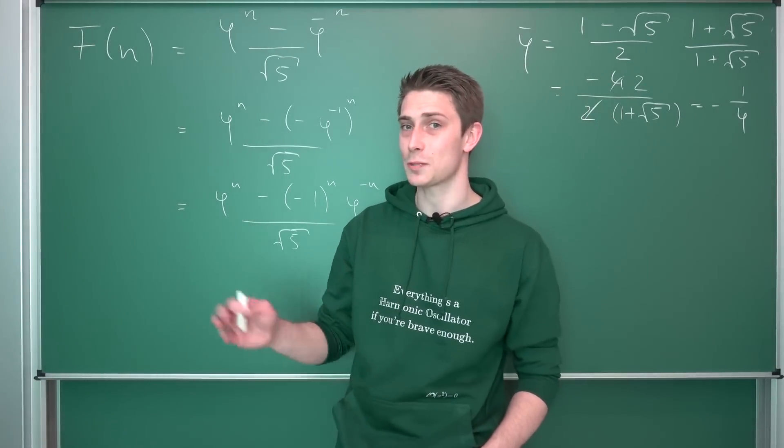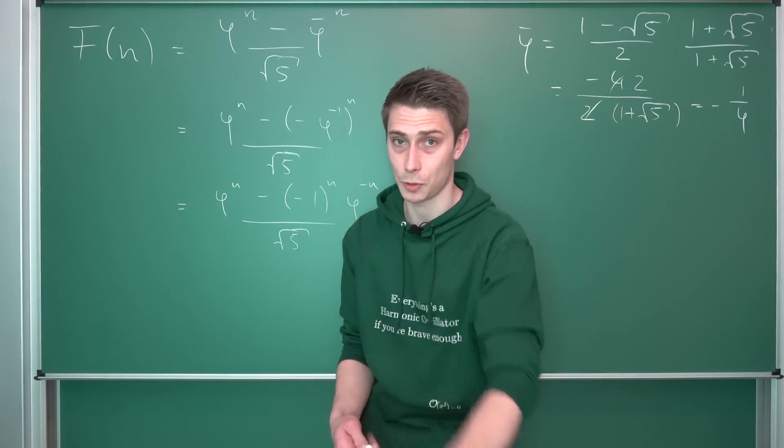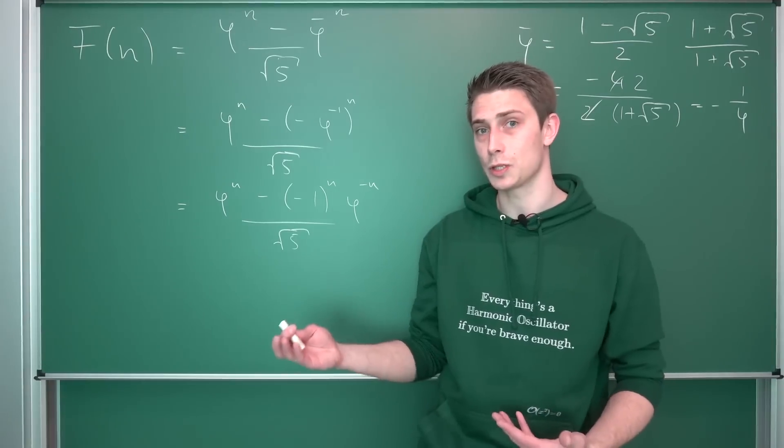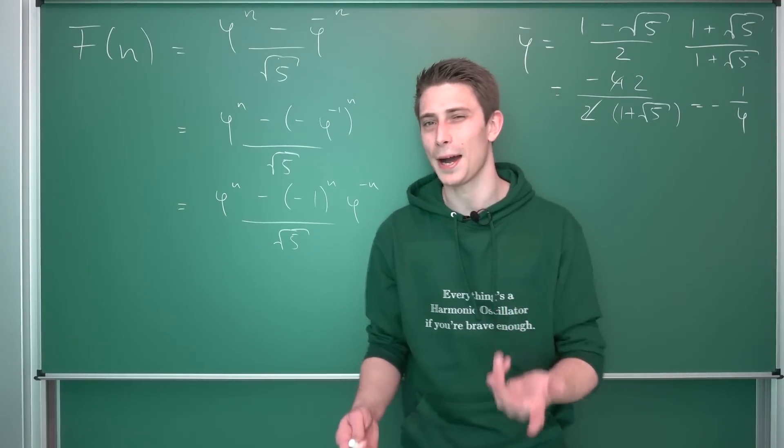Negative 1 can be expressed as, for example, on the principal branch, just working with the principal branch now, as e to the i pi, Euler's identity.